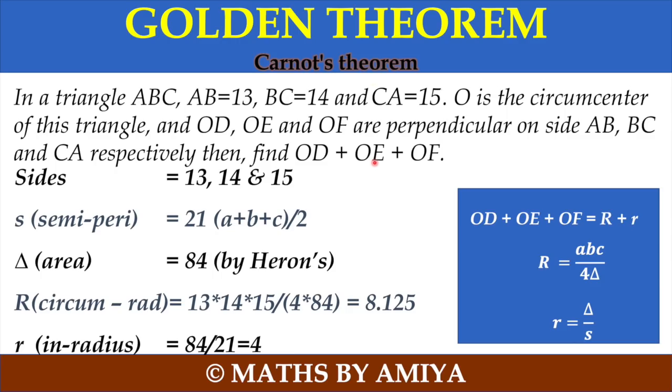Now we have to find the summation of OD plus OE plus OF which is nothing but R plus r. After putting the values 8.125 plus 4, we have nothing but 12.125 is our required answer.